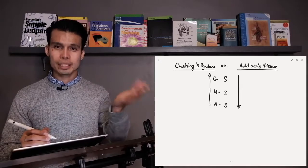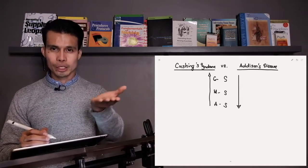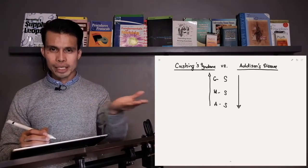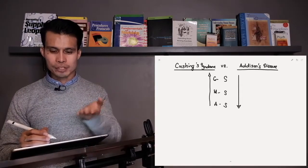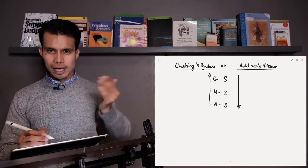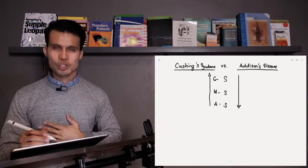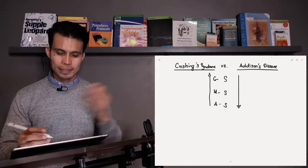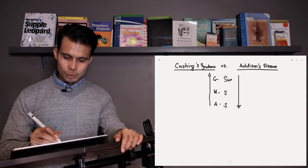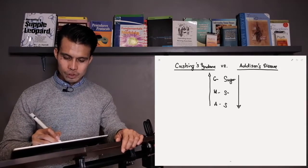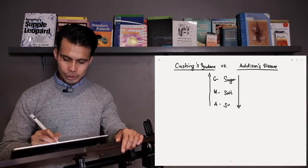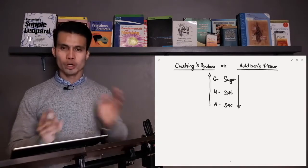In Cushing's, you have increased glucocorticoids, mineralocorticoids, and androgens — increasing your sugar, salt, and sex hormones. So the first S is sugar, then salt, then sex hormones. That's the 3S framework.